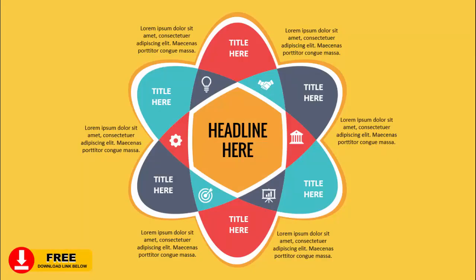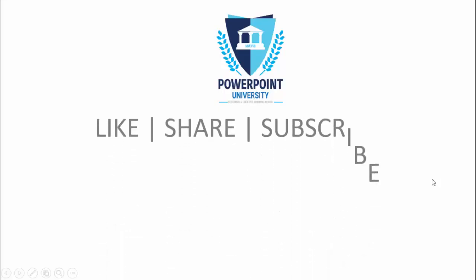In today's tutorial I'm going to show you how to create this atom shape 6 infographic slide in PowerPoint. It looks like an atom shape where you can put icons, the main headlines in the center, and then add for each option the title text and the detailed text outside of the shape.